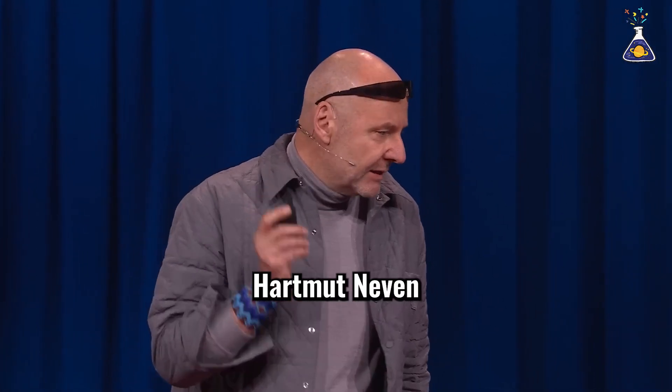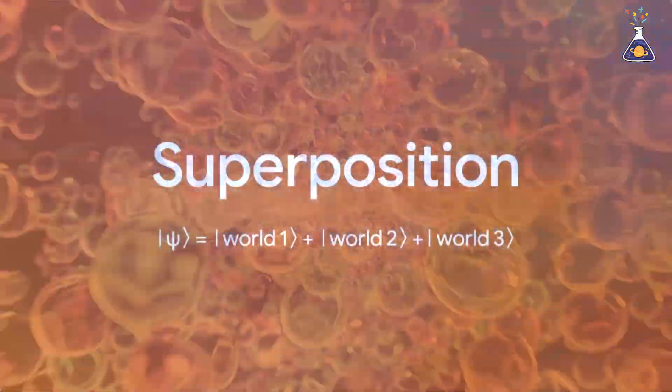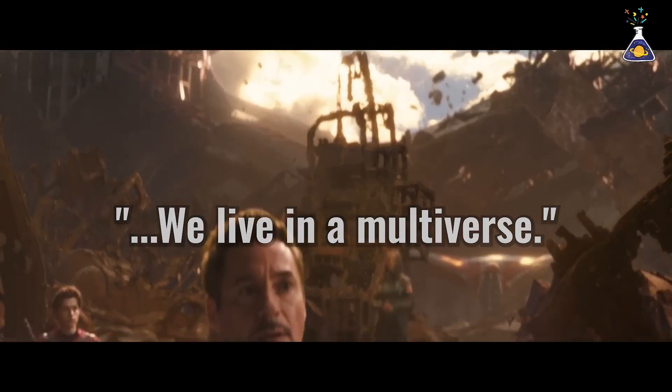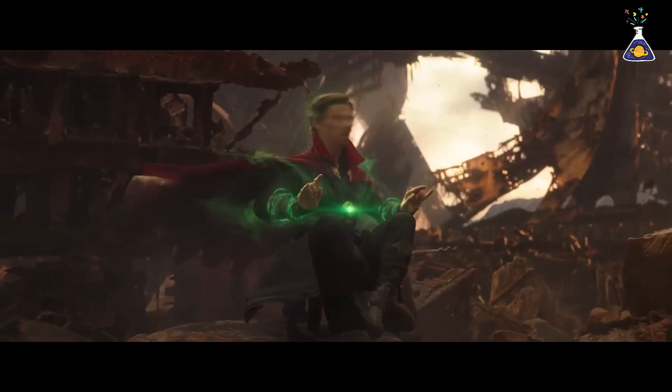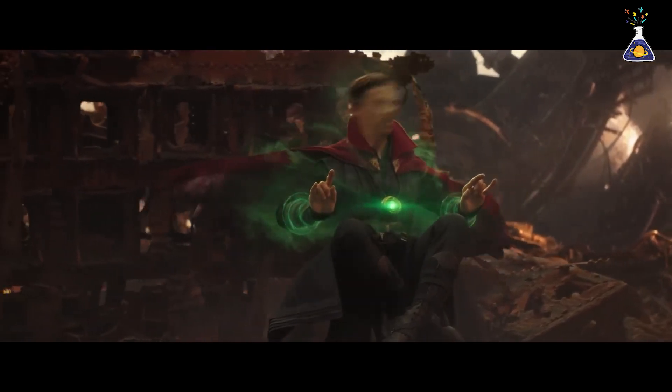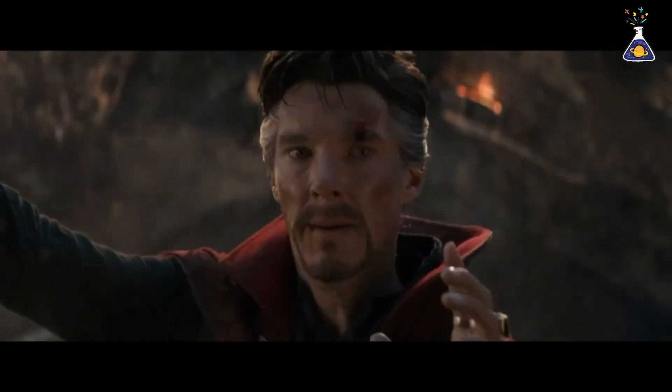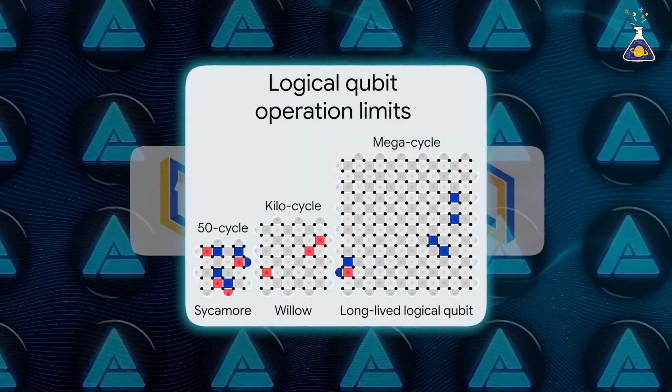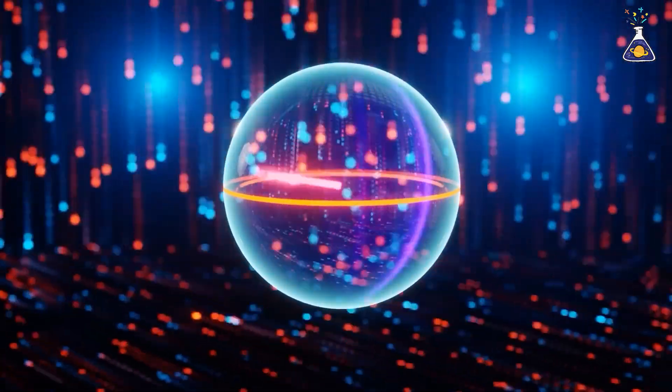Hartmut Neven, founder of Google Quantum AI, described Willow's calculation like this: It lends credence to the notion that quantum computation occurs in many parallel universes, in line with the idea that we live in a multiverse. Just like Doctor Strange in Avengers Infinity War, looking into 14,605,000 futures in mere seconds to find a way to stop Thanos, something remarkably similar is happening right now inside this tiny chip.